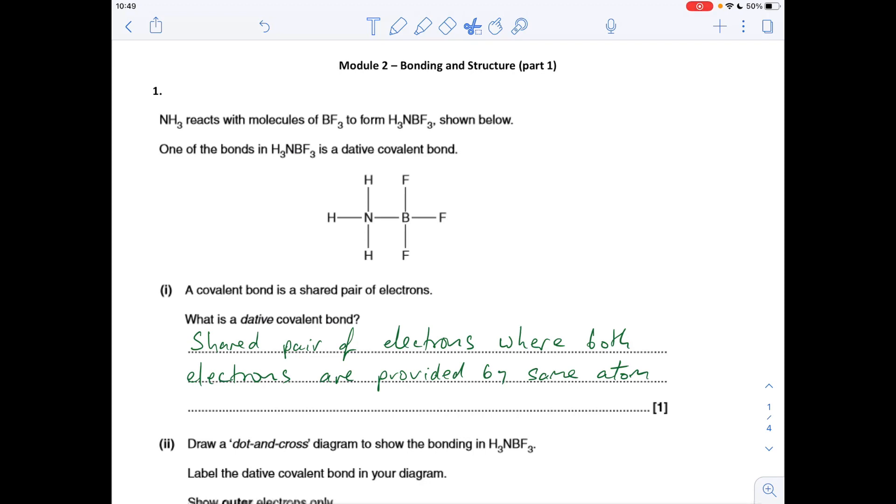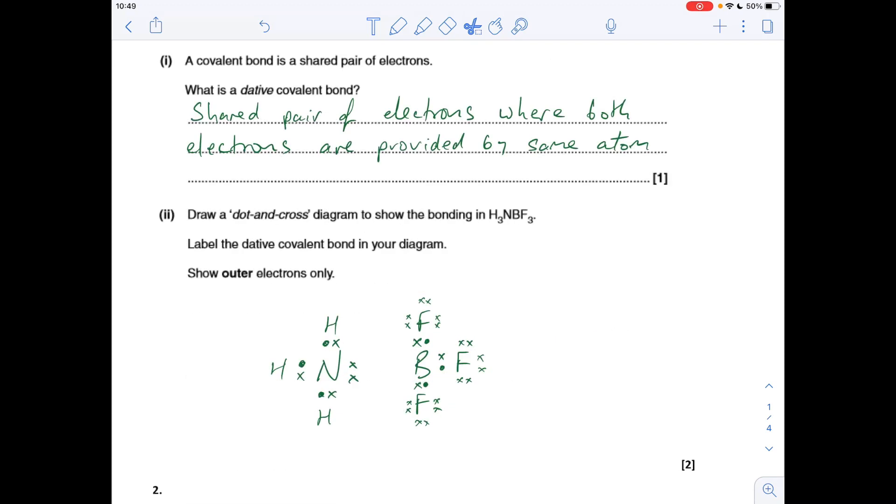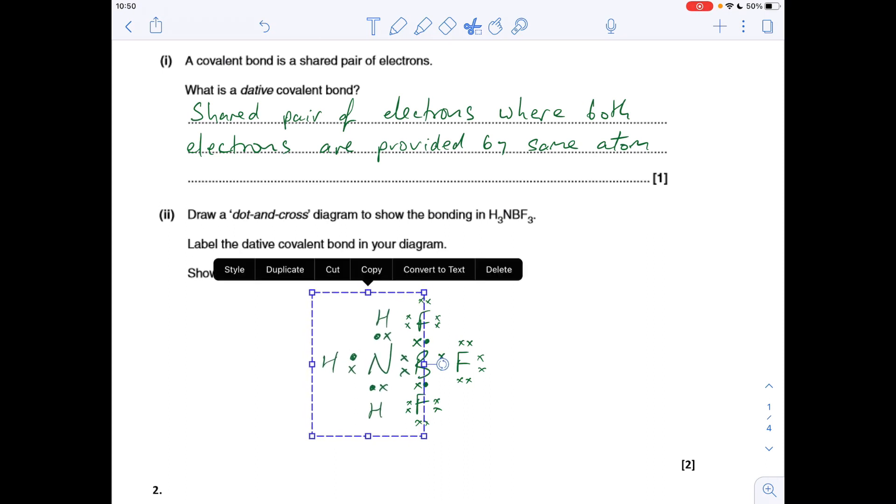For part two, dot and cross diagram to show the bonding in this molecule H3N-BF3. What I've done is drawn a separate ammonia molecule on the left and the BF3 molecule on the right. The dative covalent bond is formed when the nitrogen shares its lone pair with the boron, so that highlighted orange bond there is the dative covalent bond.